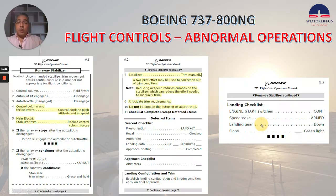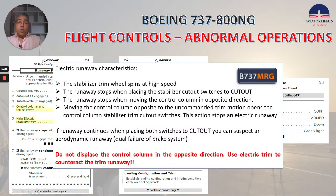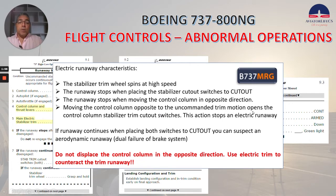We'll start with the runaway stabilizer. A few comments from the MRG on electric runaway characteristics: the stabilizer trim wheel spins at high speed. The runaway stops when placing the stabilizer cutout switches to cutout. The runaway stops when moving the control column in the opposite direction. Moving the control column opposite to the uncommanded trim motion opens the control column stabilizer trim cutout switches, and this action stops an electric runaway.